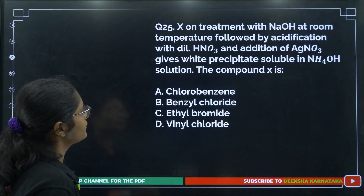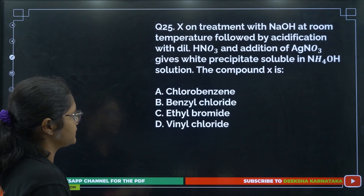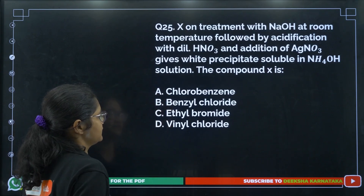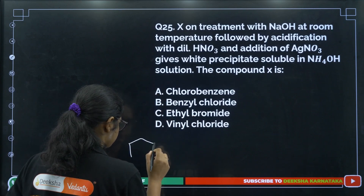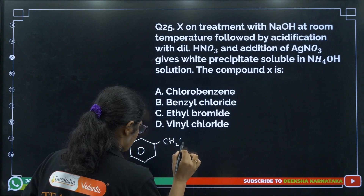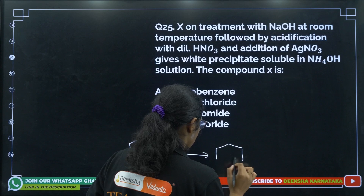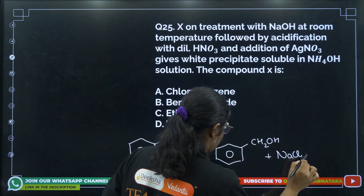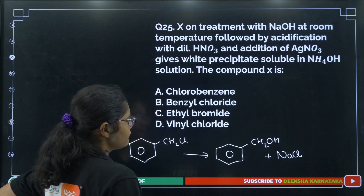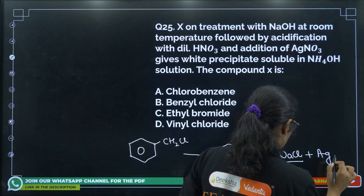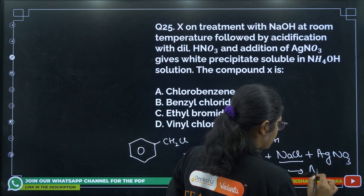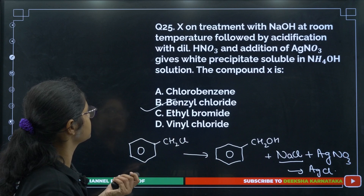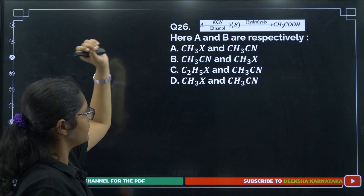Question 25: Compound X treated with NaOH at room temperature, then acidified with dilute HNO3, and AgNO3 added gives a white precipitate insoluble in ammonium hydroxide. Treating benzyl chloride with NaOH and then adding AgNO3 gives an AgCl precipitate. So compound X is benzyl chloride.